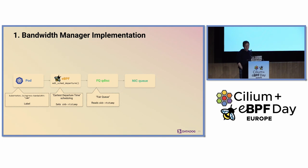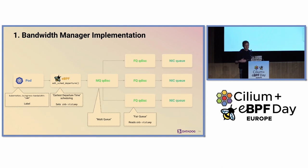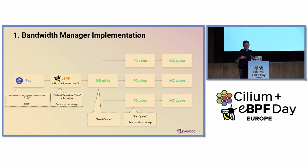Once the packet goes through this BPF program, it will go on the FQ disk set by Cilium on the machine. The FQ disk reads the timestamp set by the BPF program and slows down the packets as needed. After this, the packet goes on the network interface card queue. On a multi-core machine, this looks like multiple FQ disks managed by one global MQ disk, but the idea stays the same. Note that Cilium will override your queue disk setup on your machine as soon as you enable the bandwidth manager.